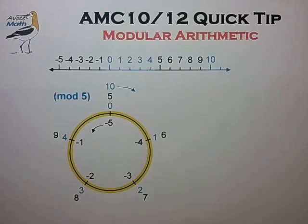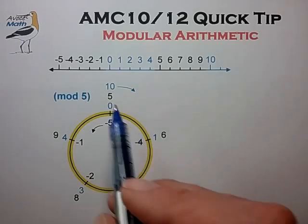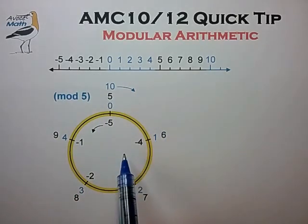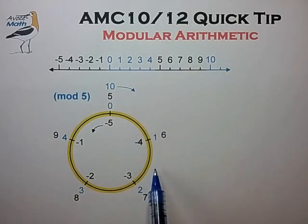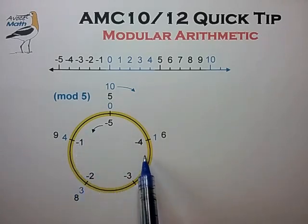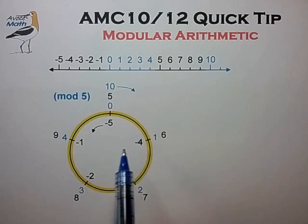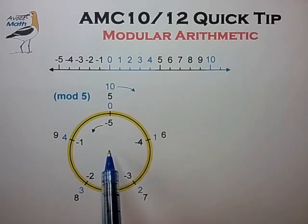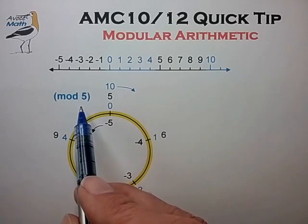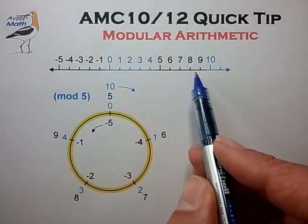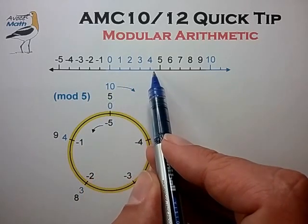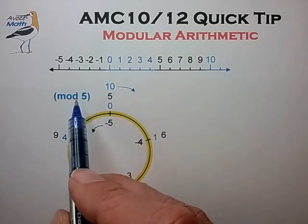Now the basic idea of modular arithmetic is to take the integer number line and wrap these numbers around a circle with positive numbers in the clockwise direction and negative numbers in the counterclockwise direction. The size of the circle is given by the modulus, 5 in this example. This is the same as taking all the integers and mapping them into the range of 0 to 4 according to their remainder upon division by 5.